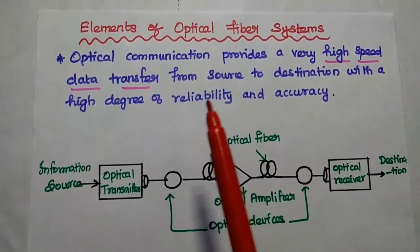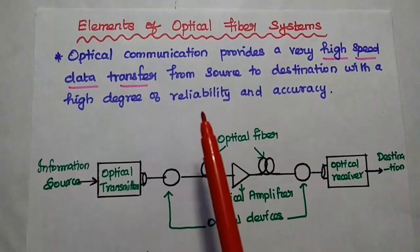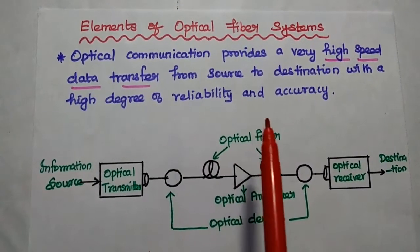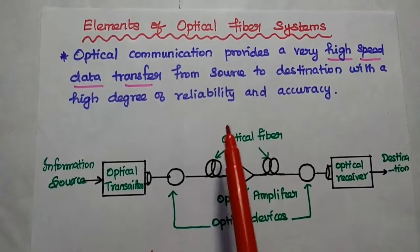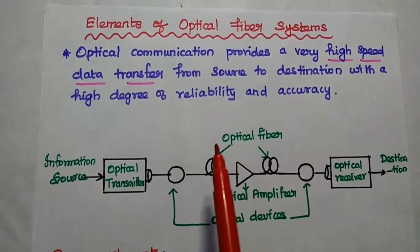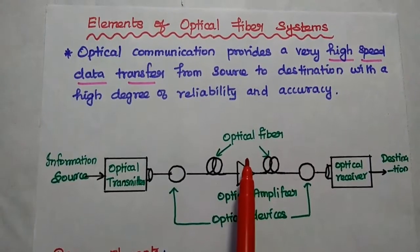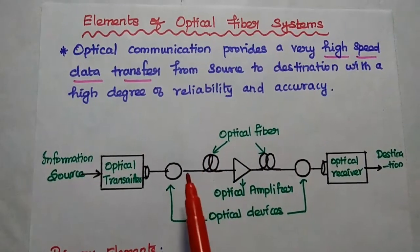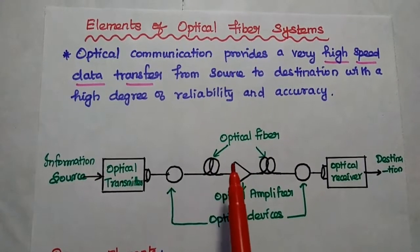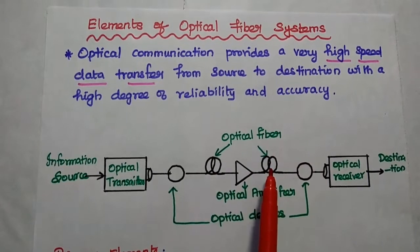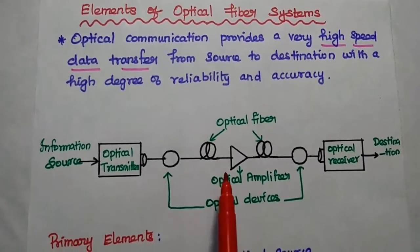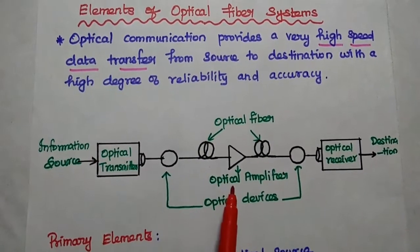Dear students, now we are going to discuss the key elements of optical communication system. Optical communication provides a very high speed data transfer from source to destination. It is widely used for long distance communication with high degree of reliability and accuracy. The light signals can be modulated to carry the original message signal to a longer distance. We are going to use optical fiber cable as a medium to transmit the signal from source to destination.